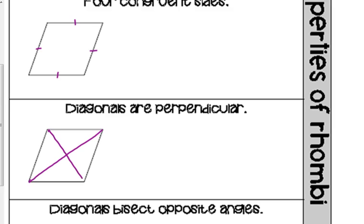The diagonals of a rhombus not only bisect each other, they are perpendicular. So when they cross in the middle, they form four right angles. They meet at right angles, forming right triangles inside the rhombus.